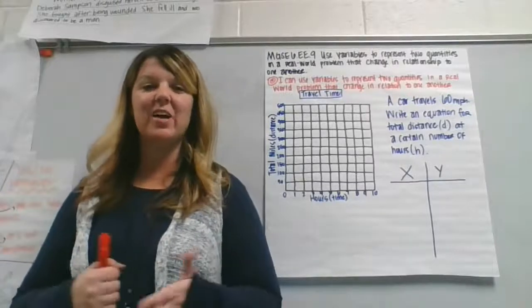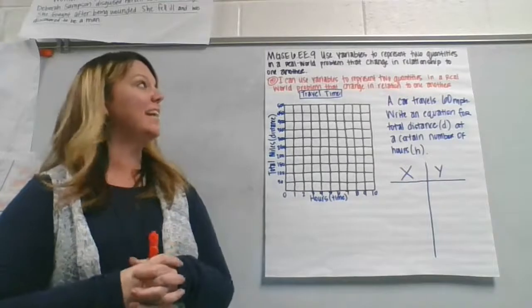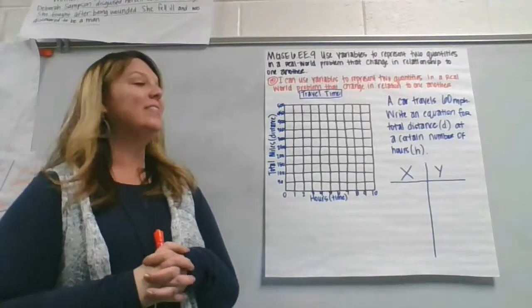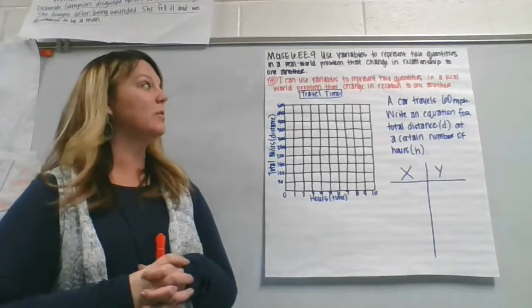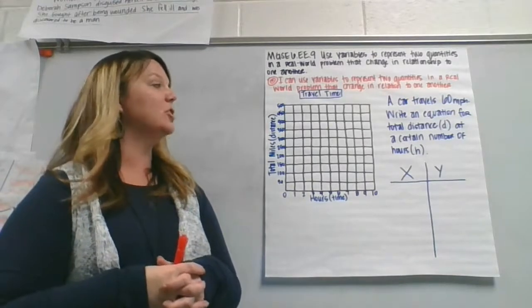Hey guys, this is your digital anchor chart for 6EE9, which is our last expressions and equations standard that says you can use variables to represent two quantities in a real world problem that change in relationship to one another.